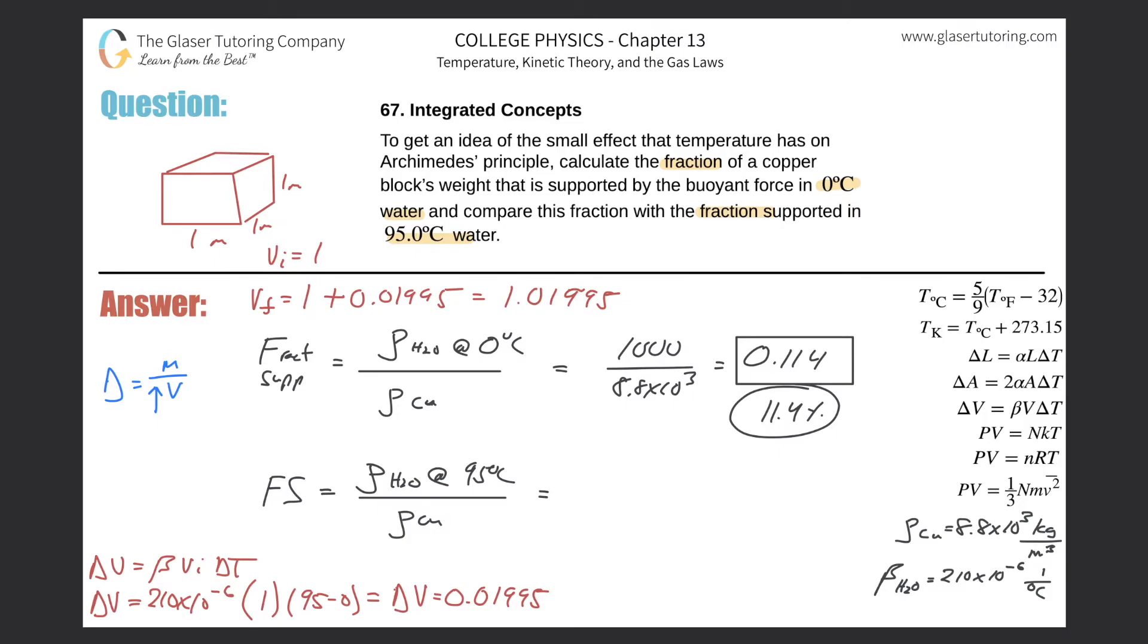We can actually calculate that now. The mass, if we had a density before at zero degrees Celsius was 1000, we assumed that we had one cubic meter, so therefore the mass of that block was a thousand kilograms. So the mass of this block is a thousand kilograms.